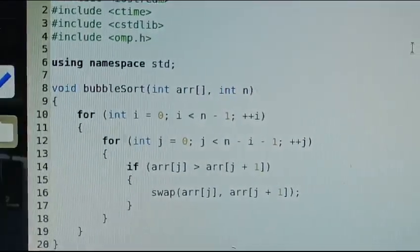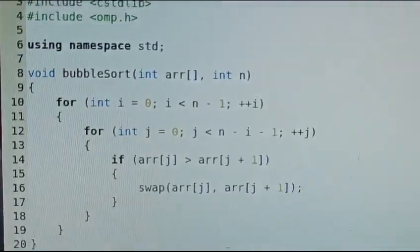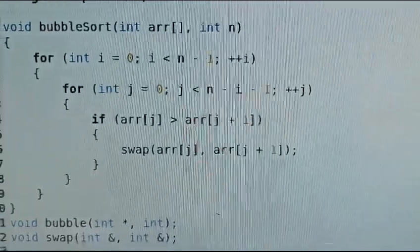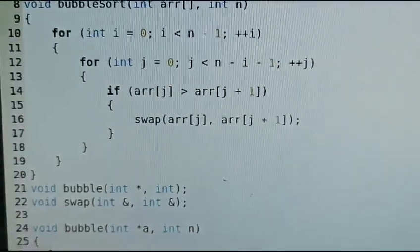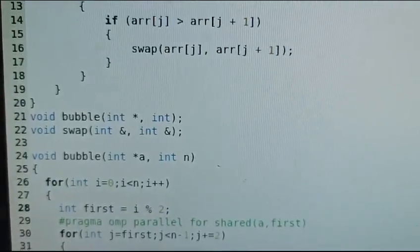omp.h header file for OpenMP, this is for parallel processing. Then using namespace std. Then bubble sort function which takes the array as an argument and the element size.